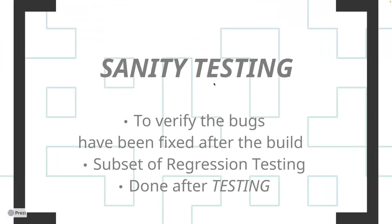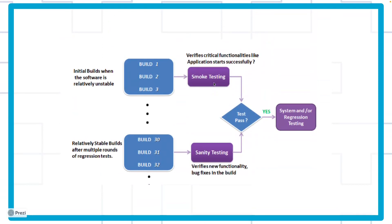Now let's jump to sanity testing. Sanity testing is where you raise bugs, the bugs are fixed and given back to you, and then you validate and make sure the bugs have been fixed and the build is working as expected. It is the opposite of smoke testing — smoke testing is done before detailed testing starts; sanity testing is done after. You got a stable build, tested it, found bugs, raised them, the development team fixed them, gave it back to you, and now you verify those bugs are fixed and the build remains stable.